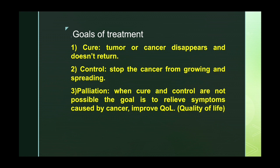Goals of treatment by these drugs could be cure, control of the disease, or palliation. Cure means complete disappearance of the malignant disease without return. Control means stopping the cancer from growing and spreading. Palliation is used when cure and control are not possible — the goal then is to relieve symptoms and improve quality of life.